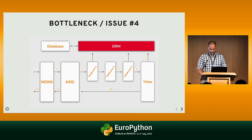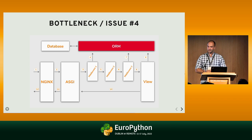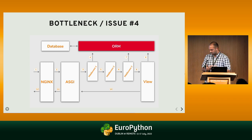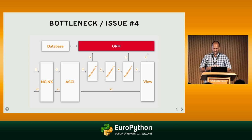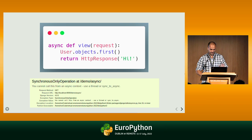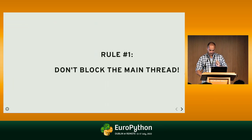Imagine you're a Django core developer with a project 15 years old, where the most complex module — the ORM — was never made to be async. You can't start from scratch. The database adapter is synchronous, so they introduced an async_unsafe decorator: it raises an error if you try to trigger a SQL query while inside an event loop, enforcing rule number one — don't block the main thread.